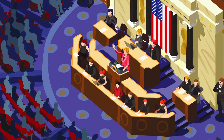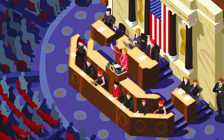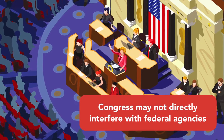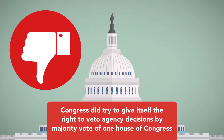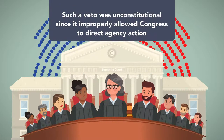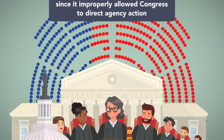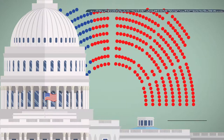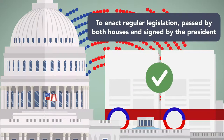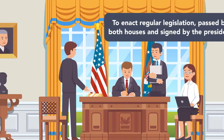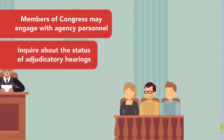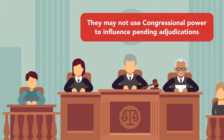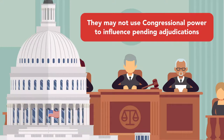However, short of writing new legislation fundamentally altering the structure or mandate of an agency, Congress may not directly interfere with federal agencies. For example, Congress did try to give itself the right to veto agency decisions by majority vote of one House of Congress. The Supreme Court held that such a veto was unconstitutional, since it improperly allowed Congress to direct agency action. The only way Congress could directly intervene in agency decisions would be to enact regular legislation, passed by both houses and signed by the President. Likewise, while members of Congress may engage with agency personnel with regard to upcoming rule changes and inquire about the status of adjudicatory hearings, they may not use congressional power, such as holding hearings, to influence pending adjudications.